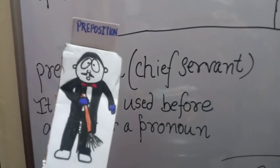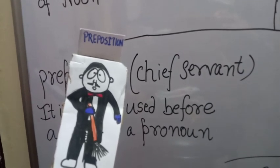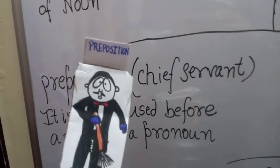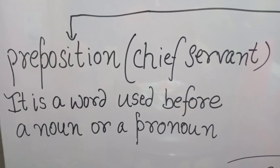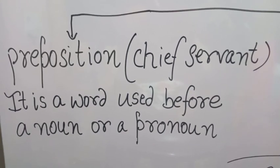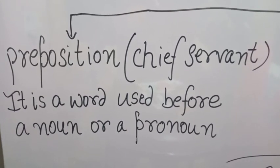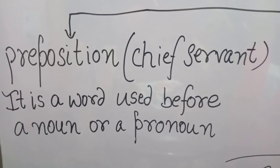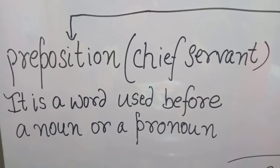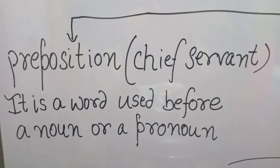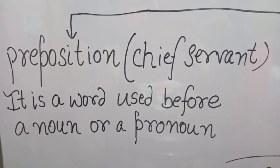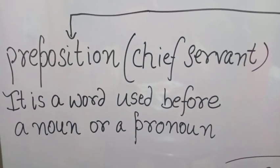Hello friends, I am Preposition, the chief servant of the grammar family. I obey my master Mr. Noun and his son Pronoun always. As per the definition, it is a word used before a noun or a pronoun. For example: the book is on the table; I live in Ludhiana. So you can see that preposition, as its name indicates, is placed before a noun or a pronoun.